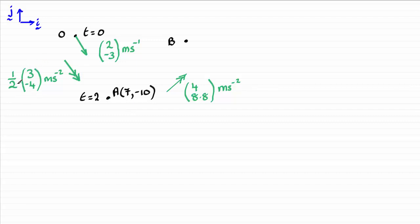although you might have it as half of 3 as being 1.5 and half of minus 4 as minus 2. And after 2 seconds it arrives at the point A with a position vector 7i minus 10j, which I've just written as a coordinate there.